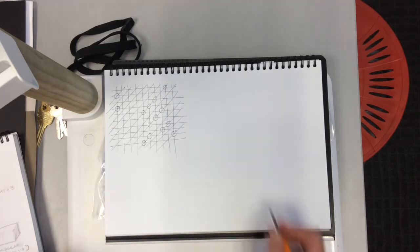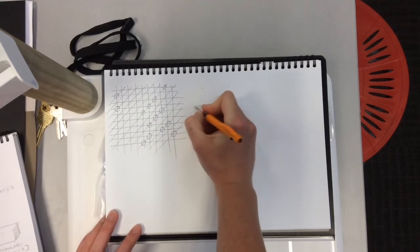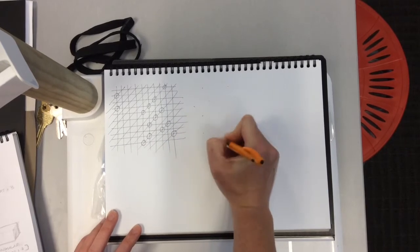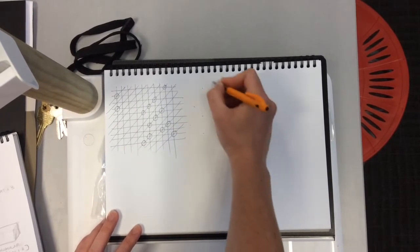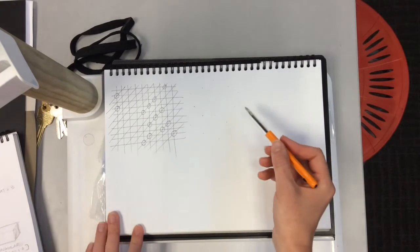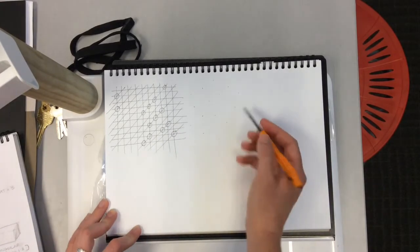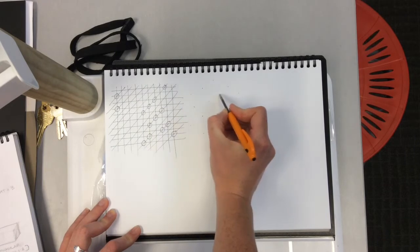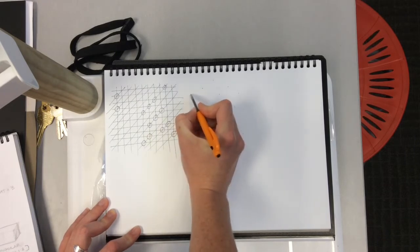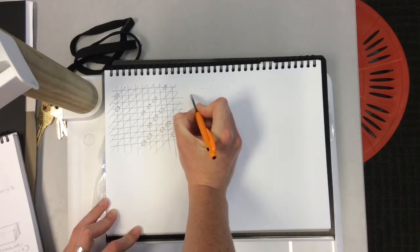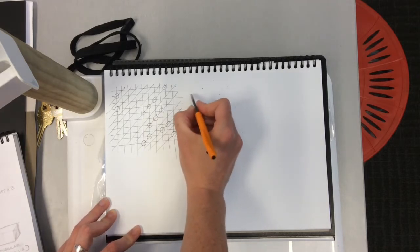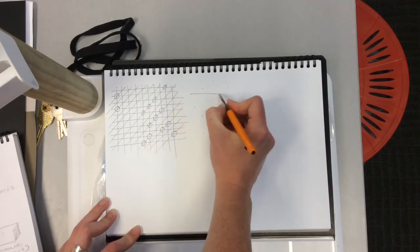Next, we're going to draw some dots and practice making our hand follow where our eye is looking. I'm going to be looking at this dot here, but my hand is here, so my hand should follow where I want it to go.